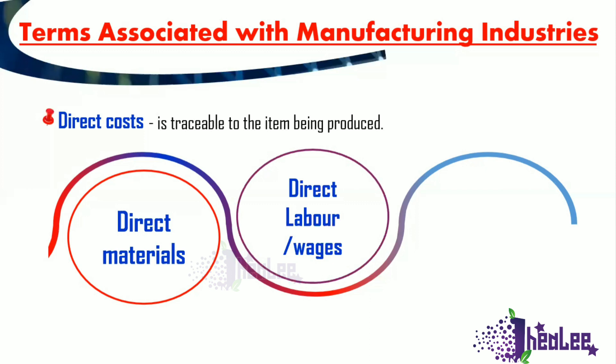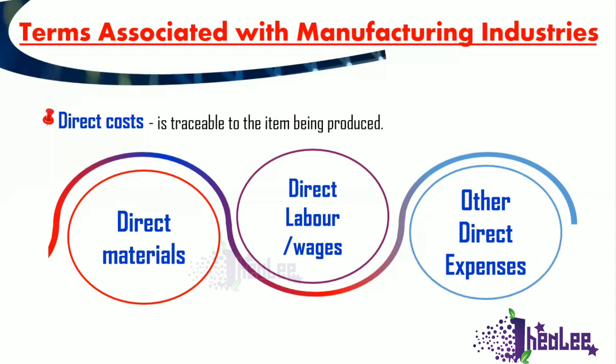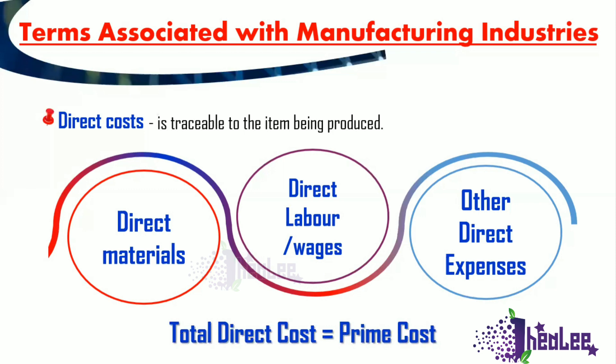Factory wages is a direct cost. Another category of direct costs is other direct expenses — expenses such as the cost of packaging, royalties (which are payments to an owner to use their assets), and special templates or designs. When you add up all your direct costs — raw material costs, direct wages costs, and other direct expenses — you get what is called prime costs. So total direct costs equals prime costs.